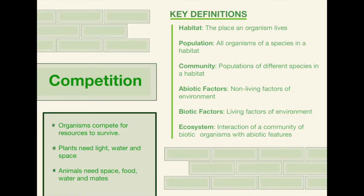First of all, we have some key definitions to clear up before we get started on the main notes. Habitat is a place where an organism lives. Population are all the organisms of a species in a habitat — a population of the world is how many humans live on it, same idea. Community is all the populations of different species in a habitat. Abiotic factors are non-living factors of the environment, and biotic factors are the living ones. An ecosystem is the interaction of a community of biotic organisms with their abiotic features — so how the living and non-living things interact with each other.